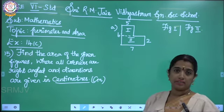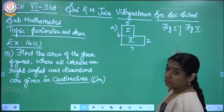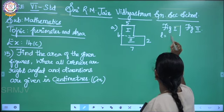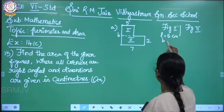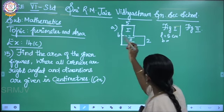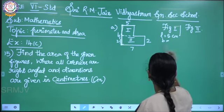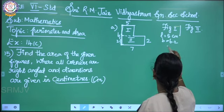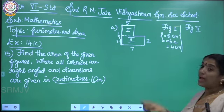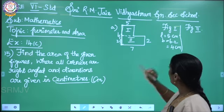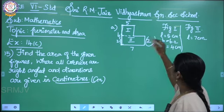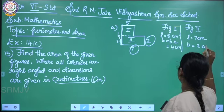I am going to write the length and breadth. For figure 1, see this is your length — length is 5 centimeter. And see your breadth: the total length is 6, and from this part to this part is 2, so 6 minus 2 which is 4 centimeter. So length is 5 and breadth is 4. For figure 2, length is 7 centimeter and breadth is 2 centimeter.